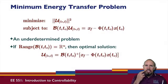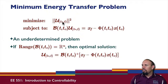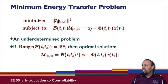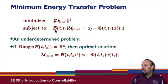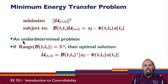One helpful property of the Gramian is we can solve the minimum energy problem: minimize the two-norm of the control sequence from t0 to t, subject to the constraint that the control sequence satisfies the transfer equation. The two-norm of this sequence is a calculation of the energy in that sequence. In general this is an underdetermined problem, and as long as the range is all of R^n, the optimal solution is given by the pseudo-inverse.